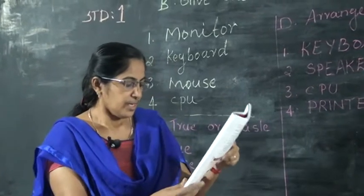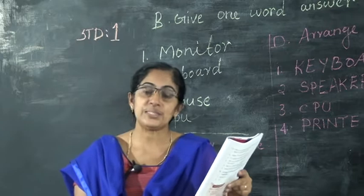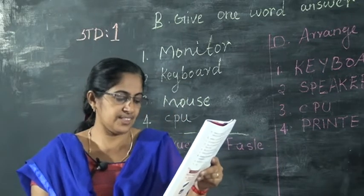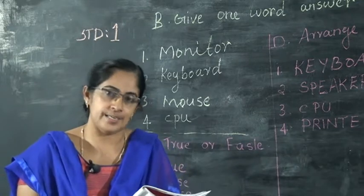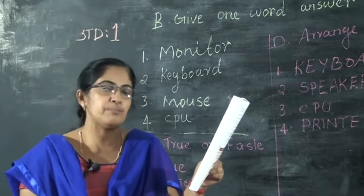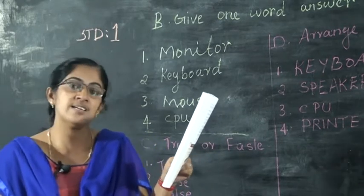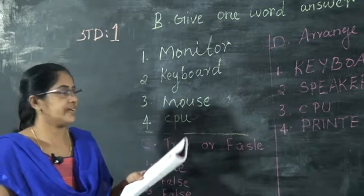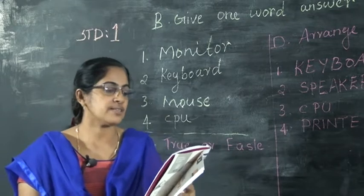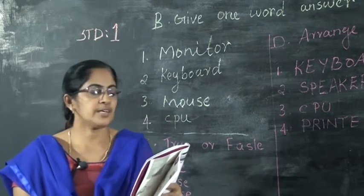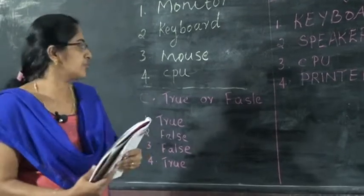Second: which part of a computer helps us to type? The answer is keyboard. Third: which part of a computer points at icons on the screen and has two buttons? The answer is mouse. Fourth: name a computer device found inside the CPU box. It is the brain of the computer — CPU.